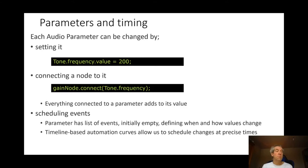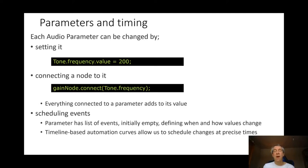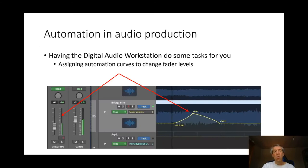We also have the ability to schedule events. Every parameter has a list of events, initially empty, that define when and how that value changes. You can set the value at a particular time, set the value again at another time, and ramp the value over time. All of these events essentially provide a timeline of automation curves for how the parameter changes at very precise times, allowing you to program all of the automation one can create in an audio workstation.